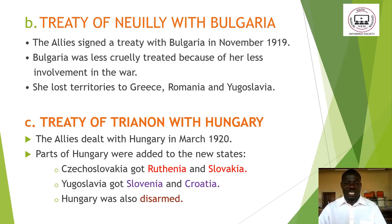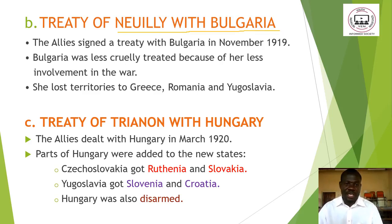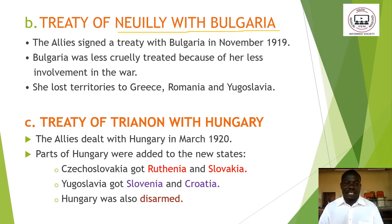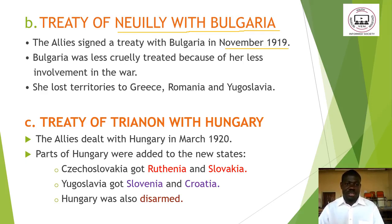There was also the Treaty of Neuilly with Bulgaria — remember, Bulgaria was on the side of Germany and Austria-Hungary during the First World War. The Allies signed a treaty with Bulgaria in November 1919. Bulgaria was treated less harshly compared to others because she was not so much involved in the war, but she still lost territories to Greece, Romania, and Yugoslavia.